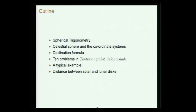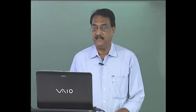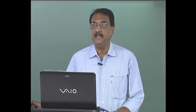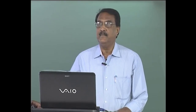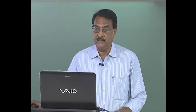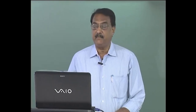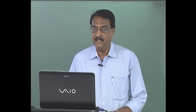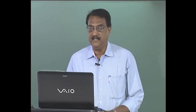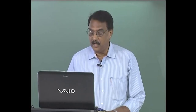This is the last of the three lectures on trigonometry and spherical trigonometry. Here I will be exclusively dealing with spherical trigonometry, which I had started in the previous lecture. We will consider the celestial sphere and the coordinate systems, then the declination formula, which is a very important formula. Then what are known as ten problems in Tantra Sangraha, Dasa Prashnaha, and a typical example, and then the distance between solar and lunar disks.